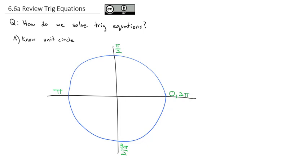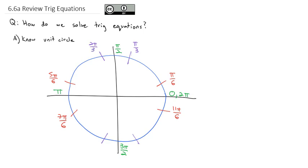We should also be able to identify all the π/6 angles. There's a π/6 just above and just below each of the horizontals. Just above the right horizontal is π/6; just below 2π is 11π/6. All the way to the left is 6π/6, so just above is 5π/6 and just below is 7π/6. We should also know where the π/3 angles are — just off from vertical: π/3, 2π/3, and near the bottom 4π/3 and 5π/3.